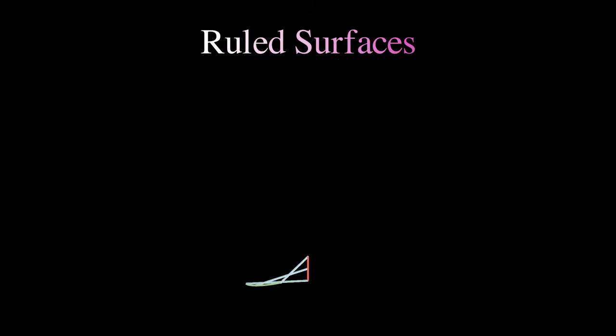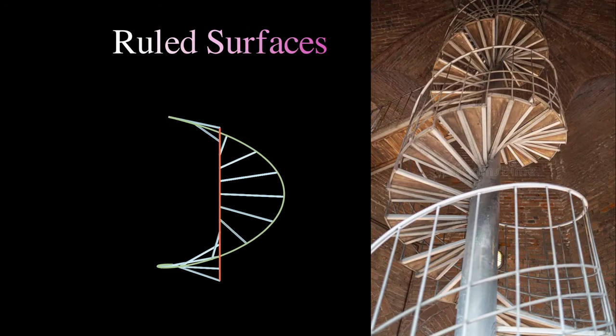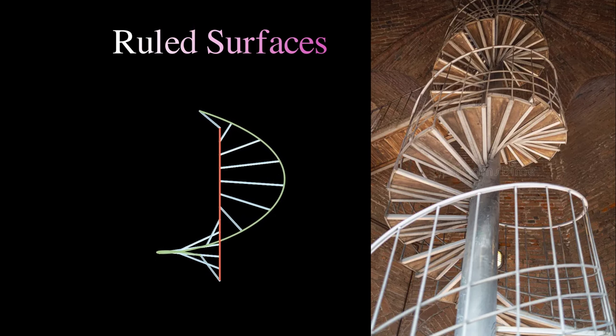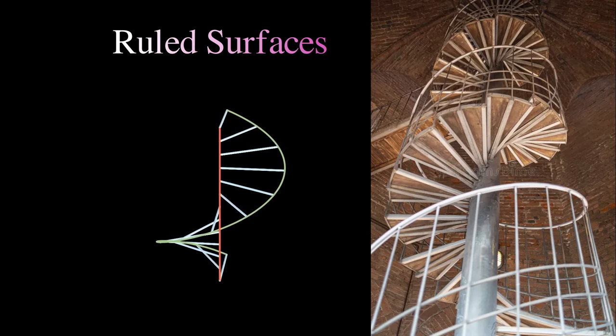A helicoid is a ruled surface that resembles a spiral staircase. Usually, we fatten some of the rulings in architecture like we do in a spiral staircase, and we make them into something like stairs.